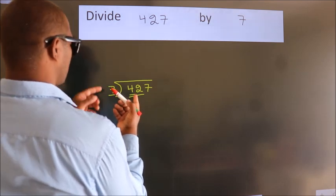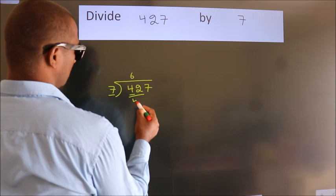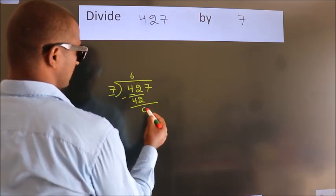When do we get 42? In 7 table, 7, 6, 42. Now we should subtract. We get 0.